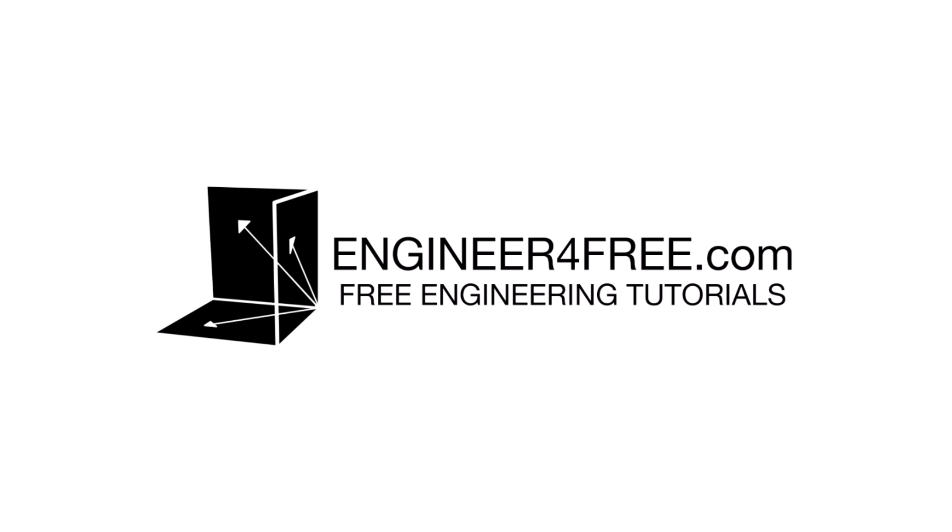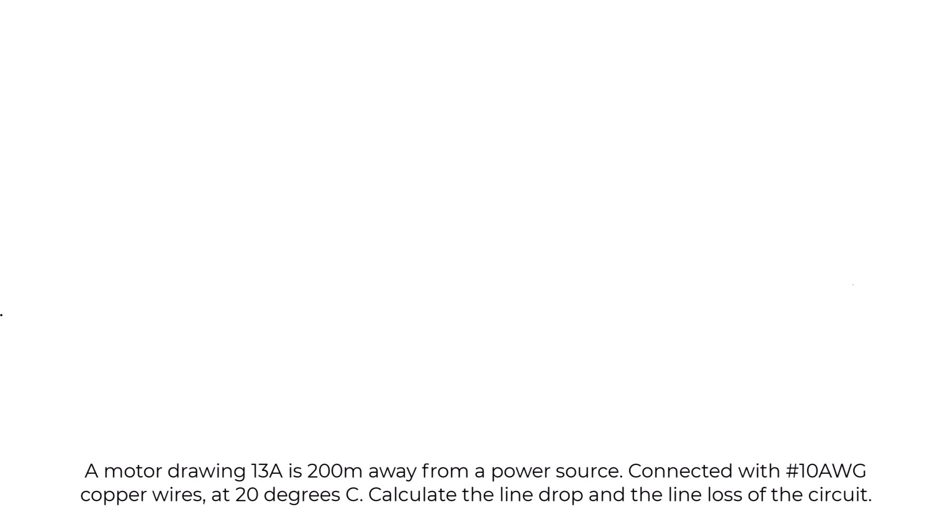Welcome back. We're going over how to calculate line drop and line loss of a circuit. The problem states: a motor is drawing 13 amps, 200 meters away from a power source, connected with number 10 AWG copper wires at 20 degrees Celsius. Calculate the line drop and the line loss of the circuit.